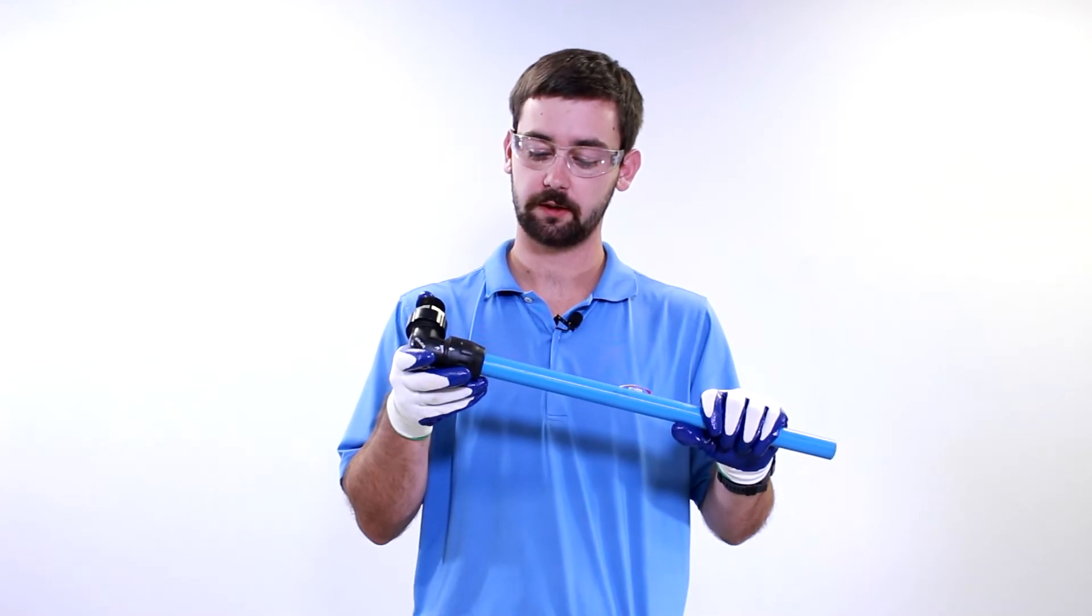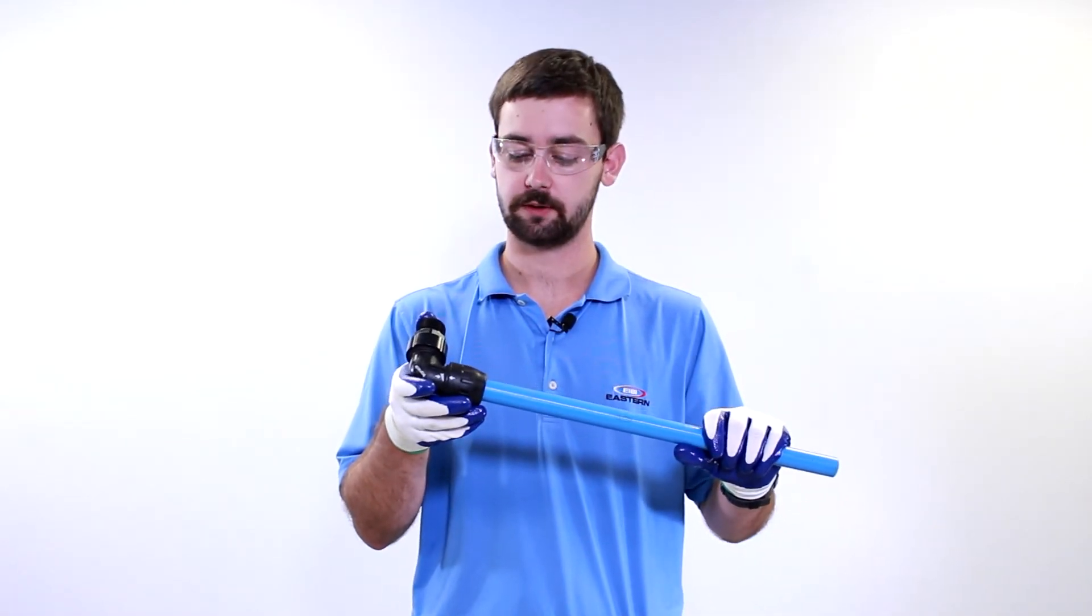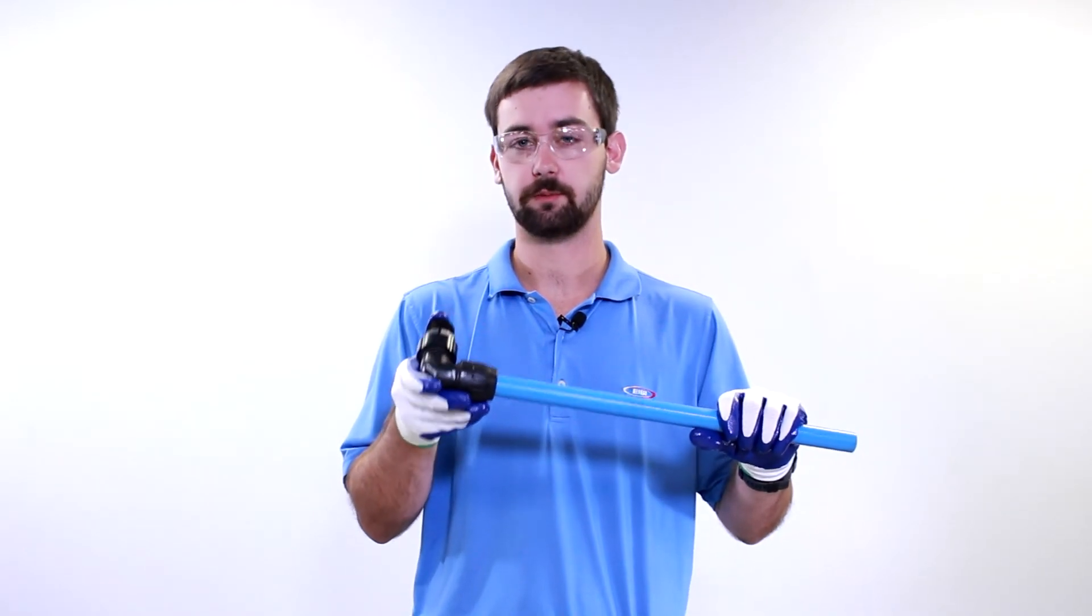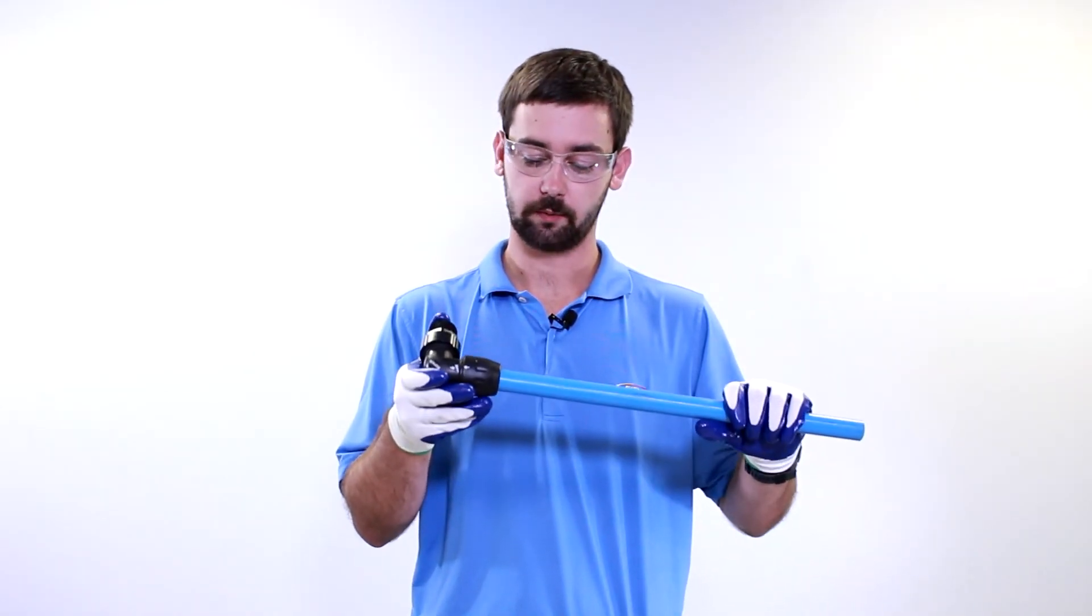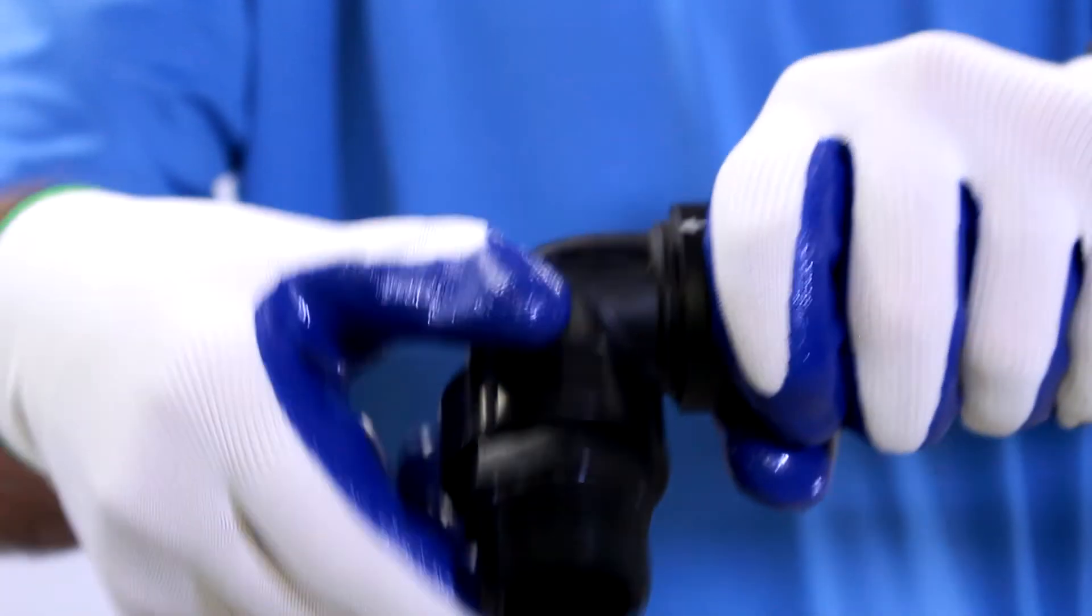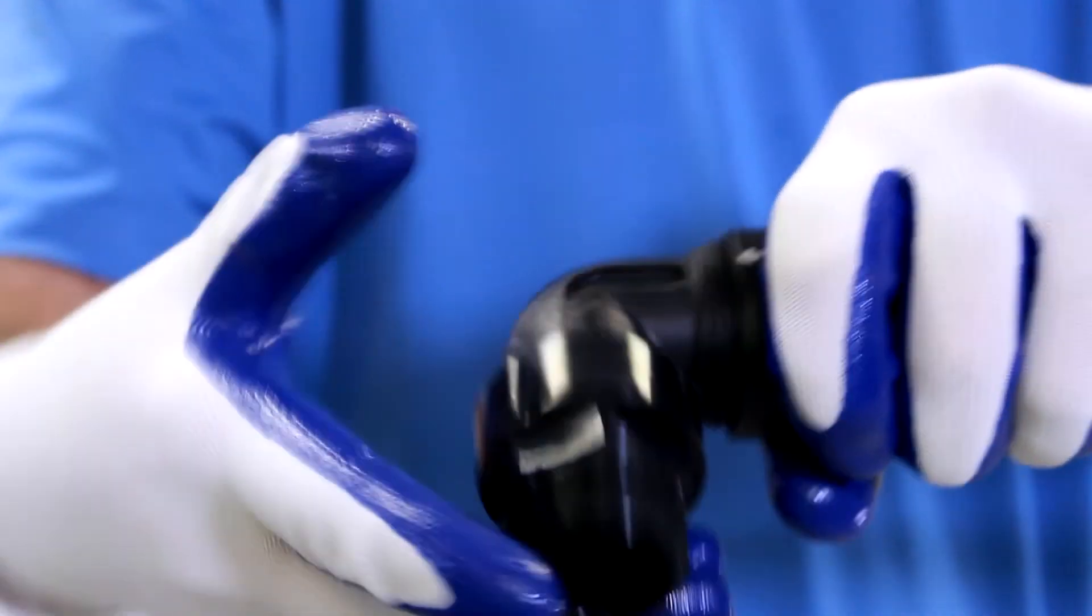So once you've set your fitting onto your pipe at the right depth of insertion, it is now ready to be in service. Now there are occasions when you have to move the fitting or relocate it. And with this system being modular, it's very easy to do. All you need to do is loosen this nut right here, and that will release the teeth and then you can slide the fitting off.